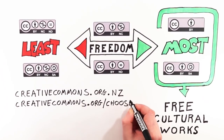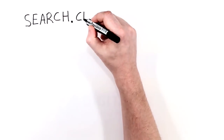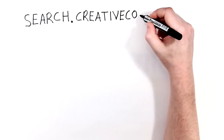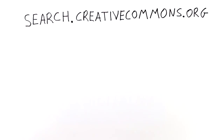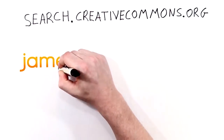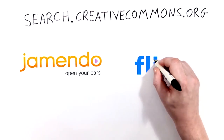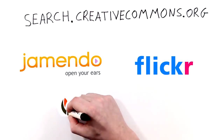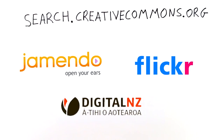There are some good ways to find other people's Creative Commons licensed work online. You can use a search filter by going to the Creative Commons website. Or why not try the Jamendo website for music, Flickr for images, or DigitalNZ for New Zealand content.